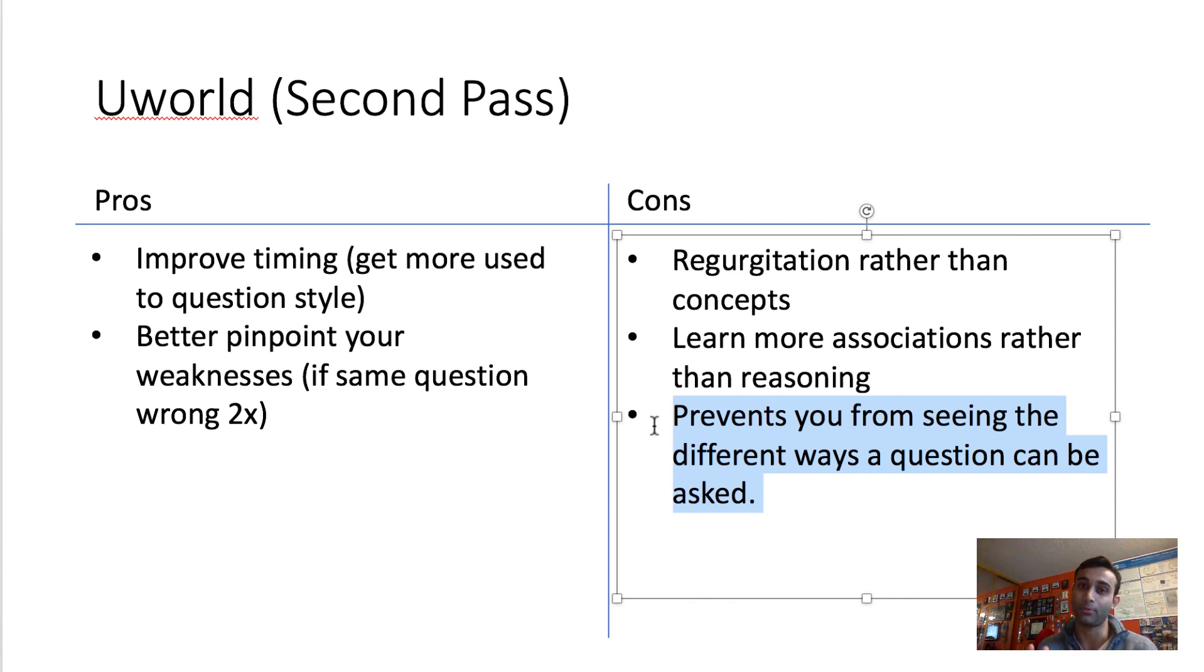And the third thing that's a con is you will be preventing yourself from seeing the different ways a question can be asked. Anyone who's taken step one will tell you there's 80 different ways to ask that same question you saw in UWorld. Maybe initially they were asking you, how do you test for tertiary syphilis? On another test, they could easily ask you, what are symptoms of tertiary syphilis?